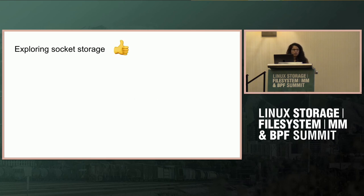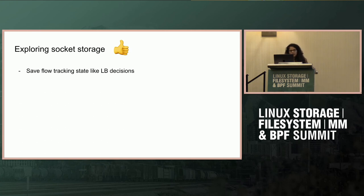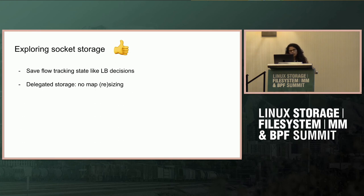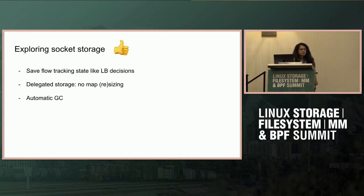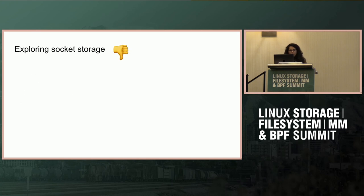Let's look at socket storage, a construct added in kernel 5.2. Some nice properties: it lets you save state at the per-socket level, so we can use it to save our load balancing decisions. It's delegated and handled by the kernel, so we don't have to worry about sizing an LRU map or hash map. One of the most attractive properties is automatic GC — when a socket goes away, its socket storage is automatically cleaned up by the kernel.